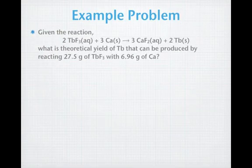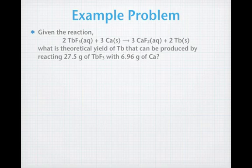Let's take a look at how this works. Given this reaction, terbium-3-fluoride and calcium react to form calcium fluoride and terbium metal. What is the theoretical yield of terbium that can be produced if we react 27.5 grams of terbium-3-fluoride with 6.96 grams of calcium?